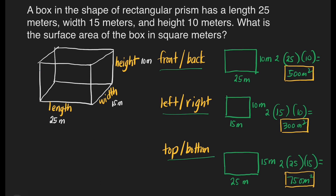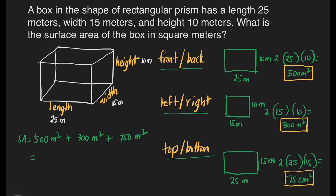We are not done yet because we still have to add all the areas to get the total surface area of this rectangular box. We will add: 500 meters squared plus 300 meters squared plus 750 meters squared. 500 plus 300 is equal to 800; 800 plus 750 is 1,550 meters squared. That is the surface area of this rectangular prism. Final answer.